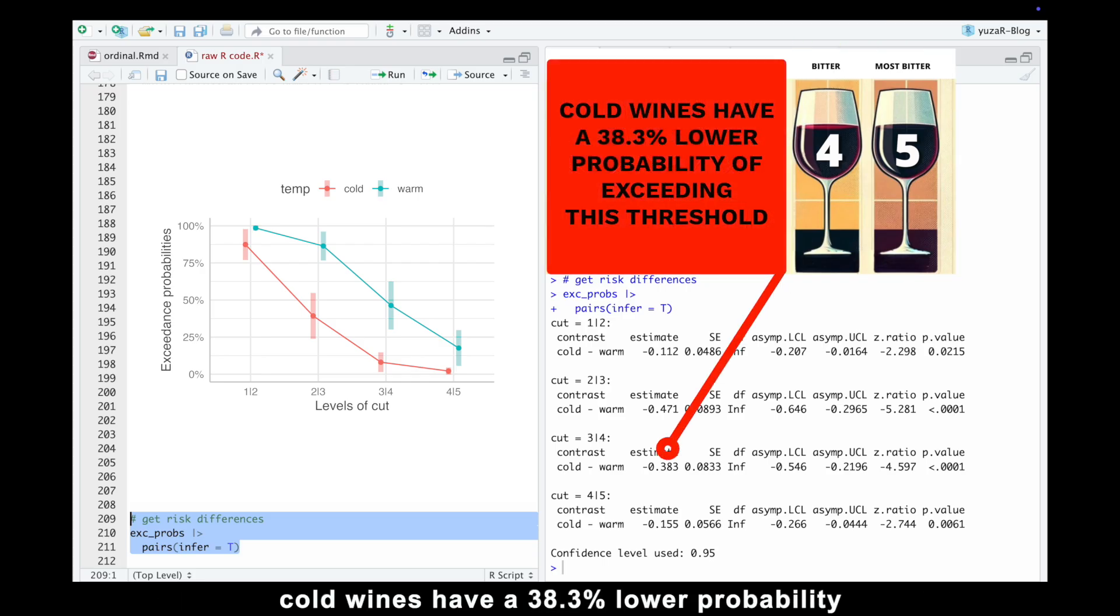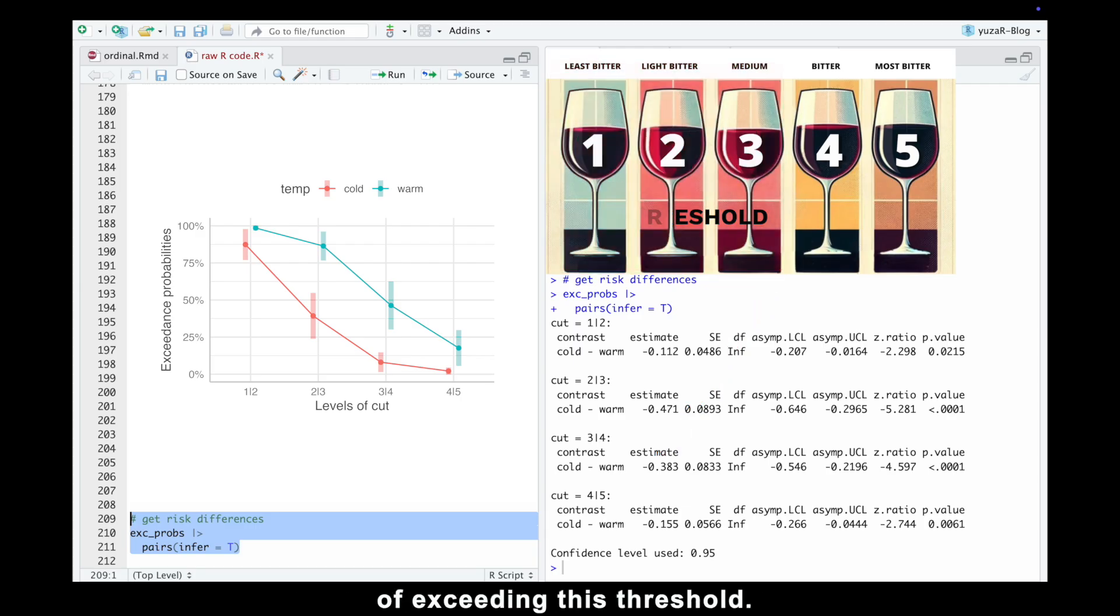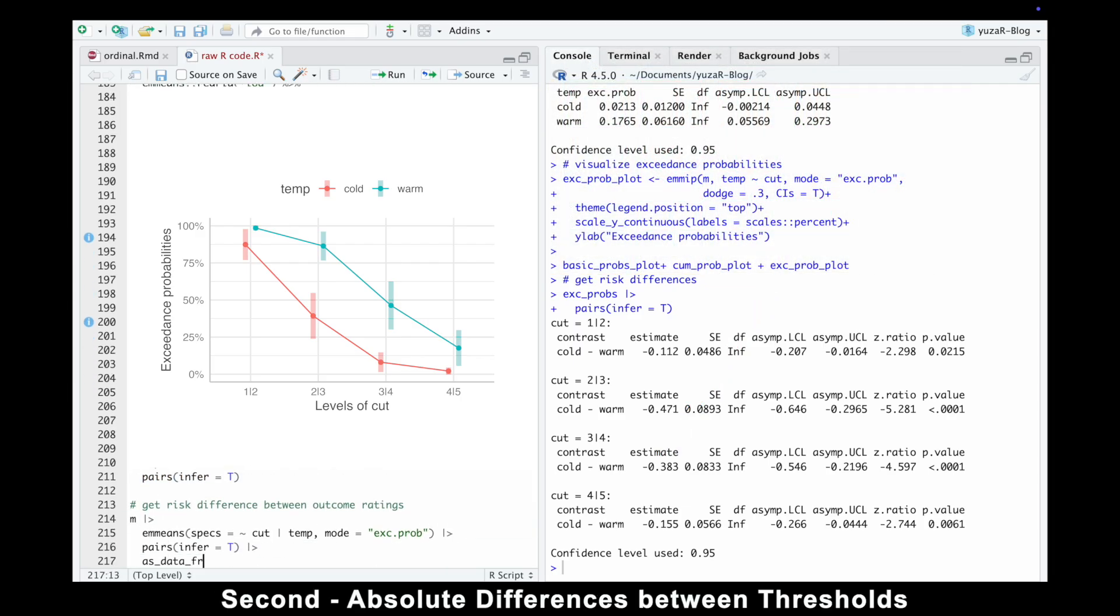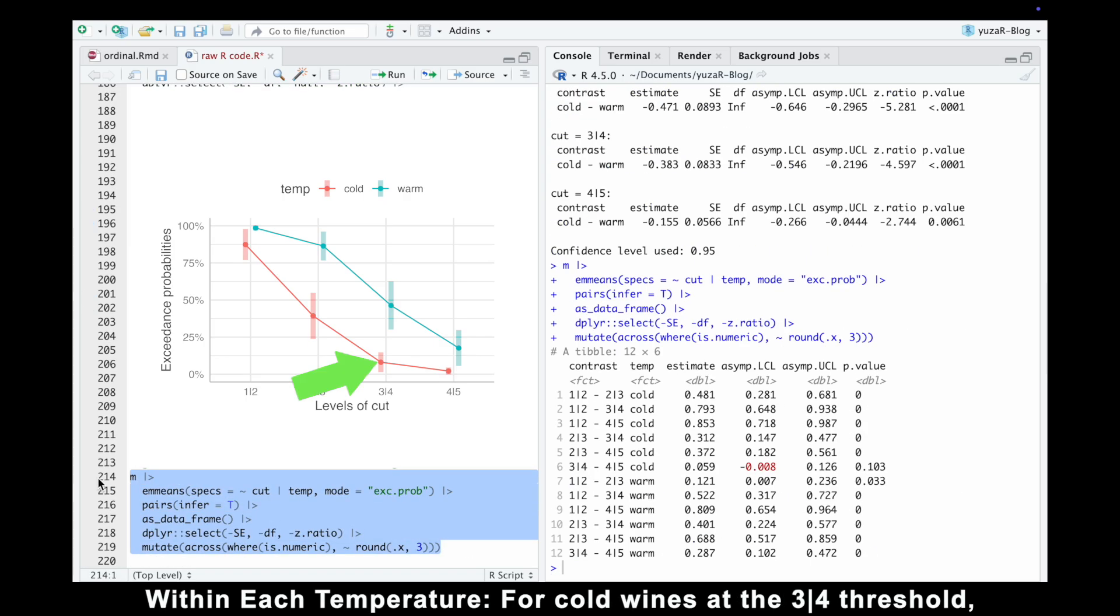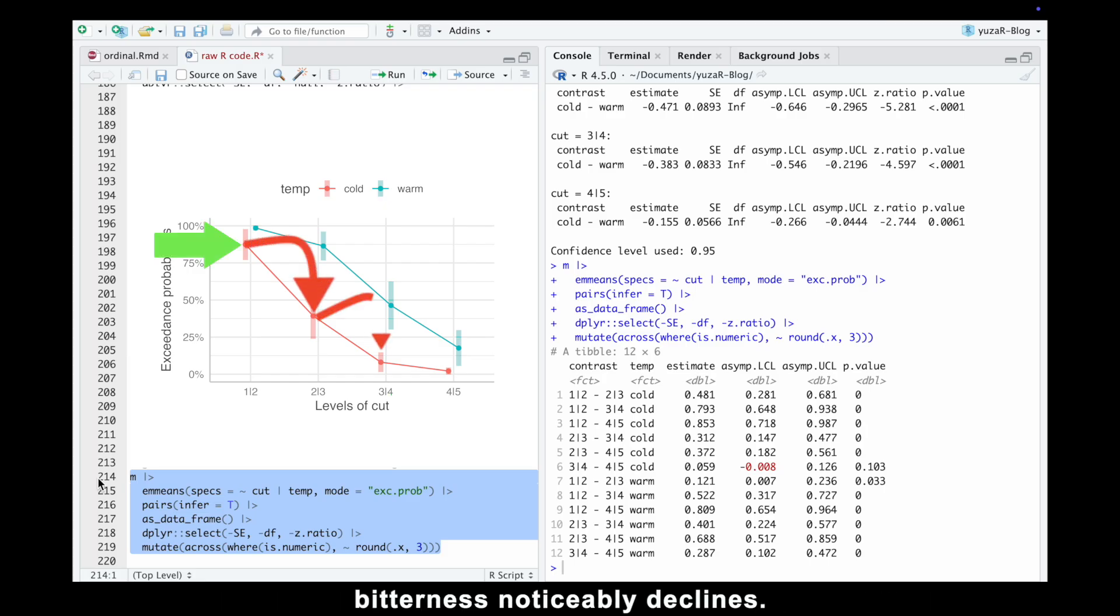Specifically, cold wines have a 38.3% lower probability of exceeding this threshold. Second, absolute differences between thresholds within each temperature. For cold wines at a 3 to 4 threshold, bitterness noticeably declines.